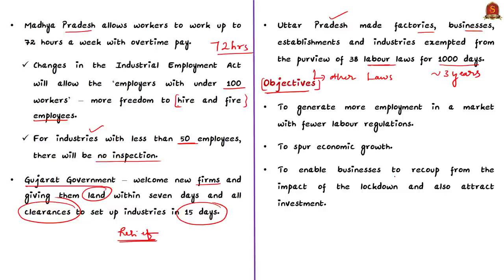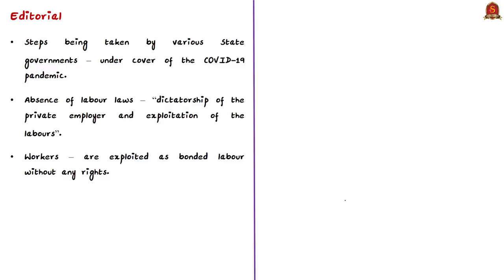These changes aim to generate more employment in a market with limited labor regulations, which in turn reboots the slowing economic growth. It is also hoped that by enhancing labor flexibility, these changes would enable businesses to recover from the impact of the lockdown and attract additional investment. However, the question is: promoting business at the cost of rights of workers? The editorial points out that the steps being taken by various state governments under the cover of COVID-19 are grossly unconstitutional and illegal. In the absence of labor laws, it may lead to dictatorship of the private employer and exploitation of laborers.